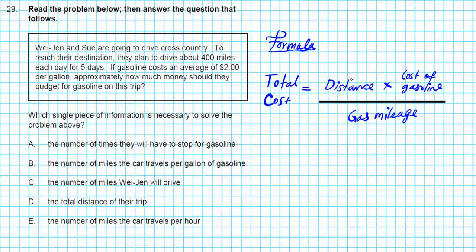The components that we need to calculate the total cost are all listed on the left side. Let's see what's missing. Distance, is that a missing piece of information? The answer is no. Notice they're traveling 400 miles per day for five days. So your distance is 400 times the number of days, 400 times 5, you have a total of 2000 miles that are going to be covered on the trip.